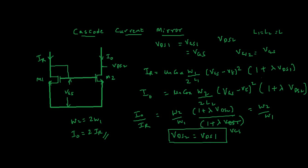This requirement — VDS2 = VDS1 — is not achievable with the basic circuit. To achieve this result, we have one more circuit called the cascode current mirror, which ensures VDS2 is equal to VDS1, or at least 99.9% equal. At that point we can ensure IO = 2·IR. That is why we need to study the cascode current mirror.